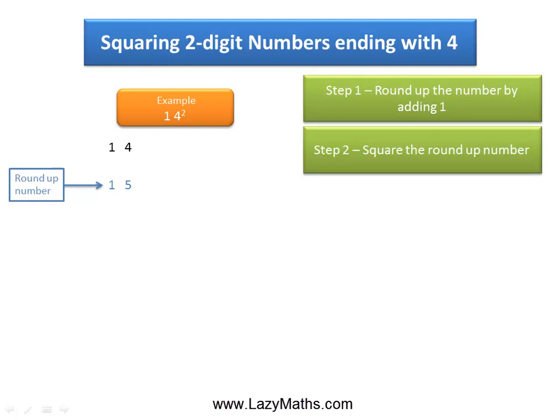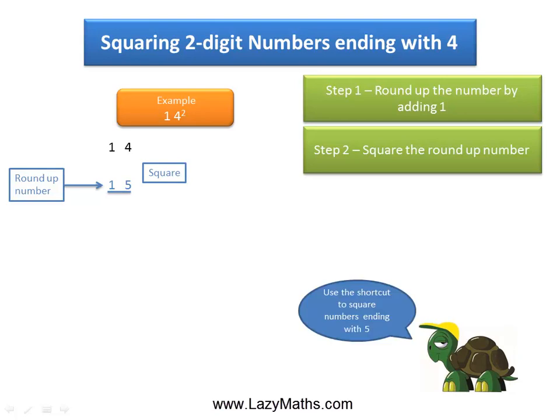The next step is to find the square of 15. Squaring 15, or 15 times 15, can be easily done using the shortcut for squaring numbers ending with 5, because 15 ends with 5. You could use that shortcut, which is available for free on lazimatch.com. 15 squared is equal to 225.